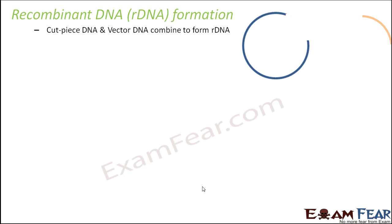The next important thing that happens is recombinant DNA formation — how recombinant DNA will be formed. The cut piece DNA and vector DNA combine to form rDNA. Restriction endonuclease helps to cut a portion of the plasmid DNA or vector DNA, so that some space is created for the cut piece DNA to join with it.